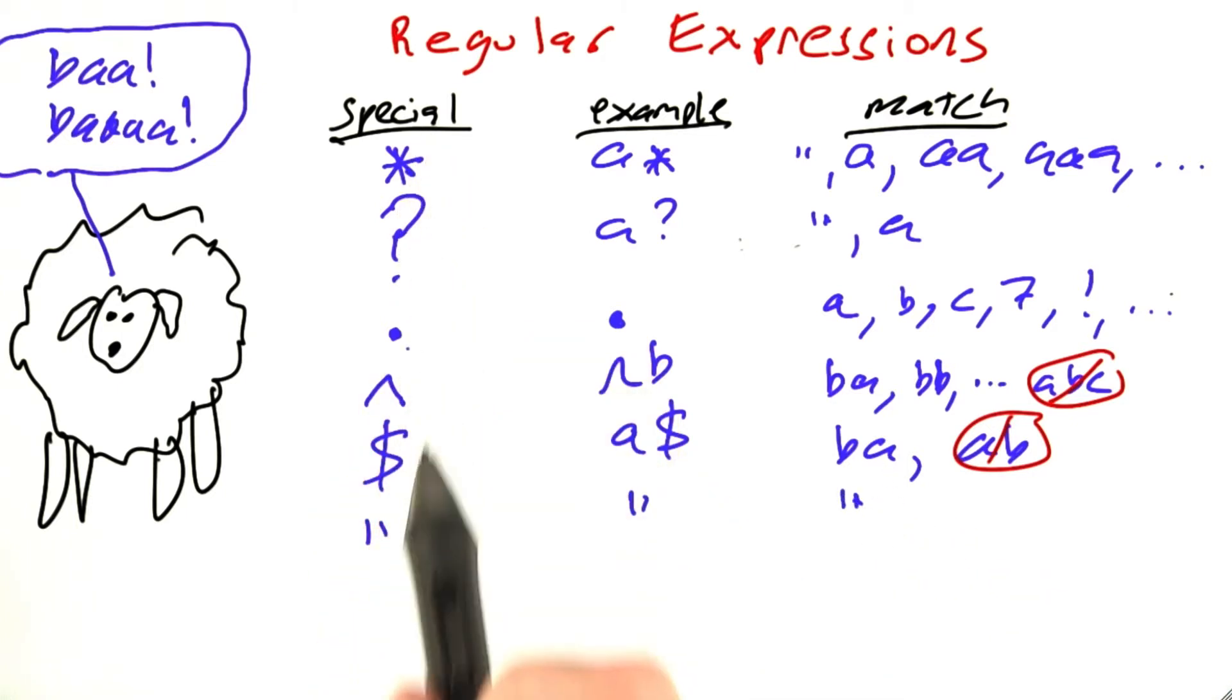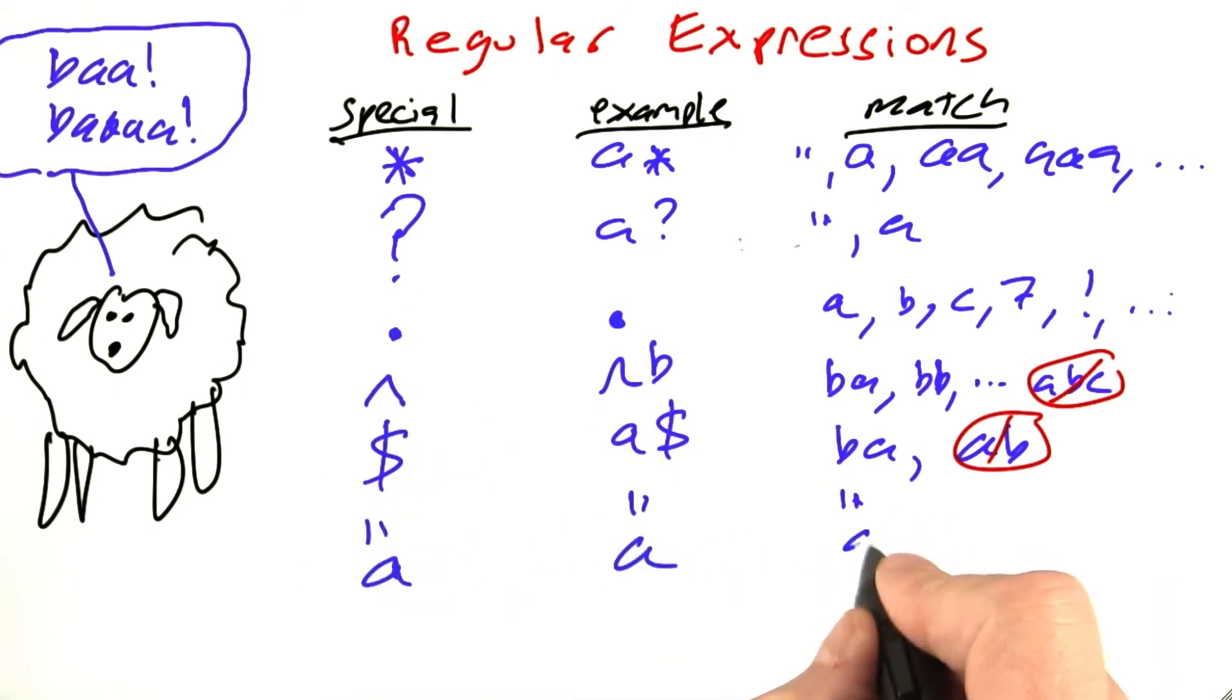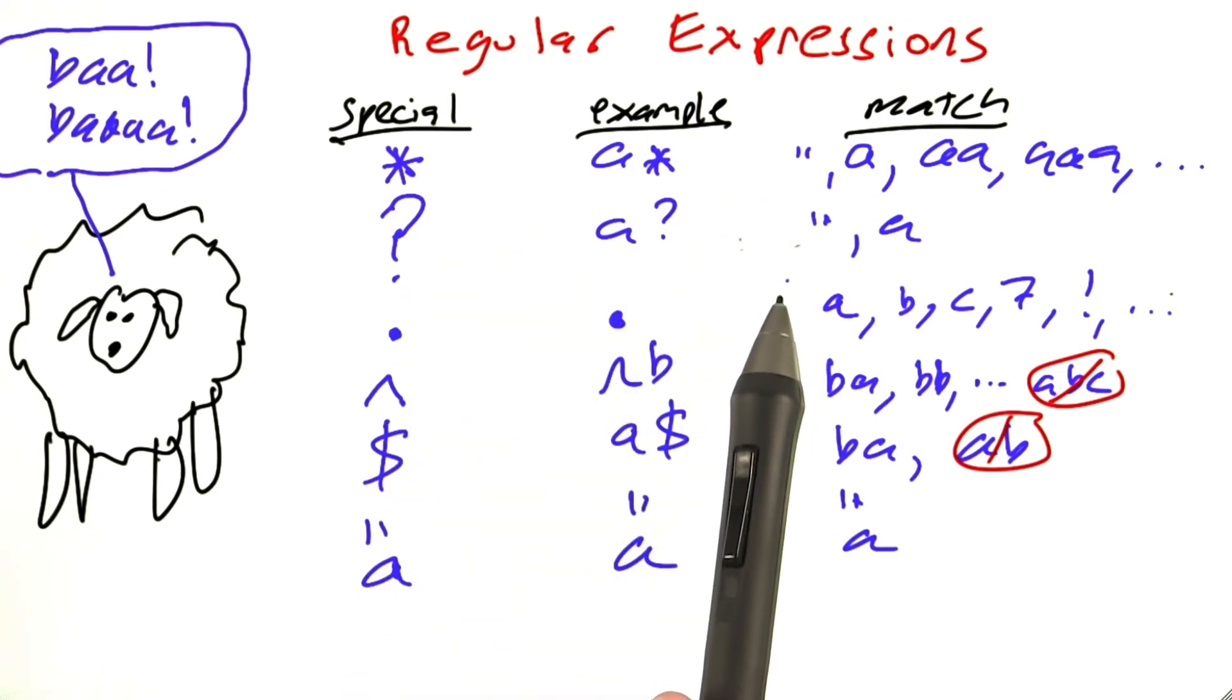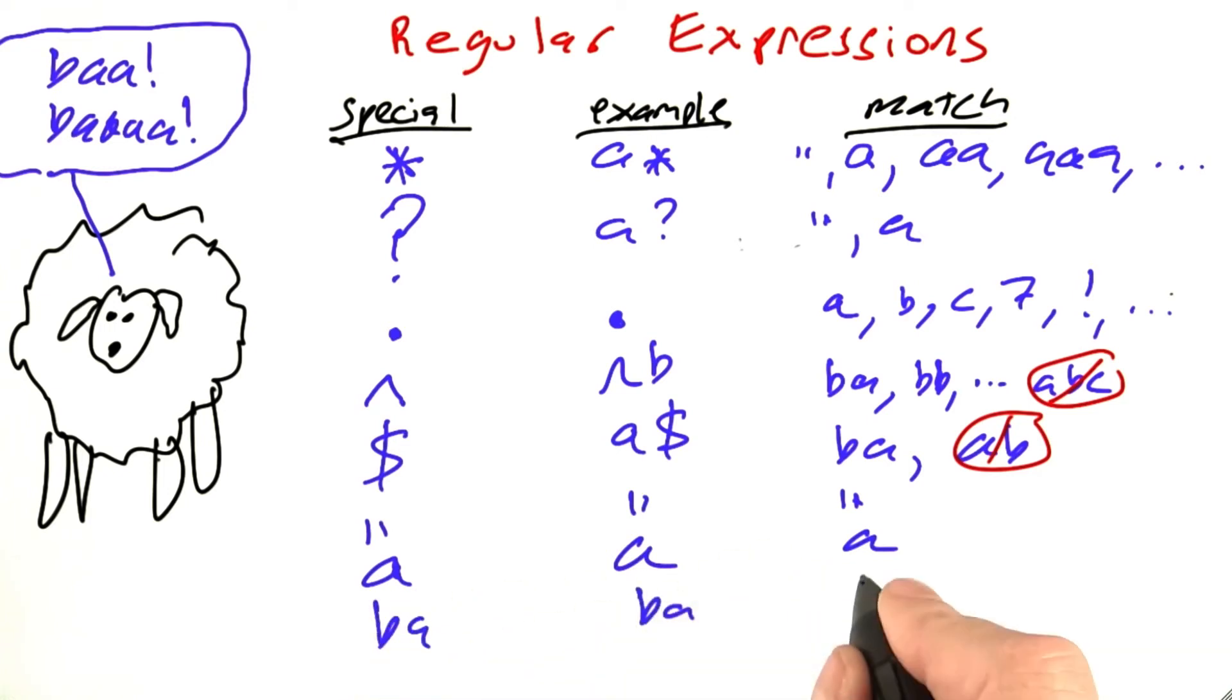Then any character that's not one of these five, like an A, that matches exactly the character itself. A matches A, B matches B, and so on. And finally, any concatenation of two regular expressions matches those two, one followed by another. So, BA, that matches BA, but doesn't match other sequences like AA or BB.